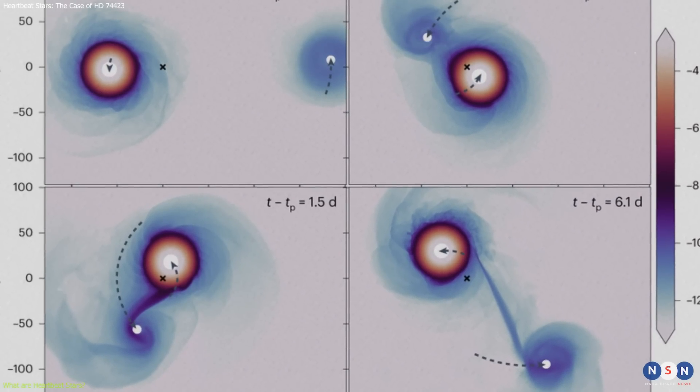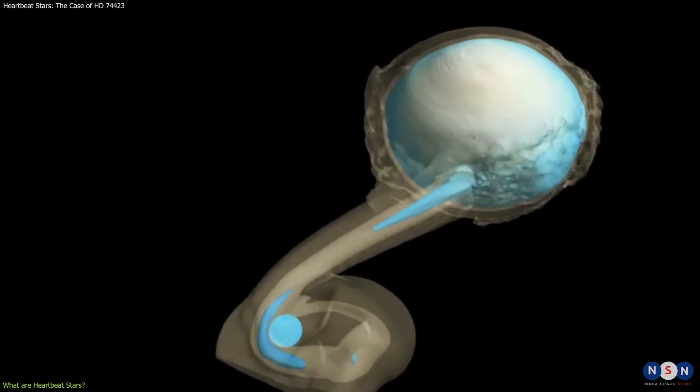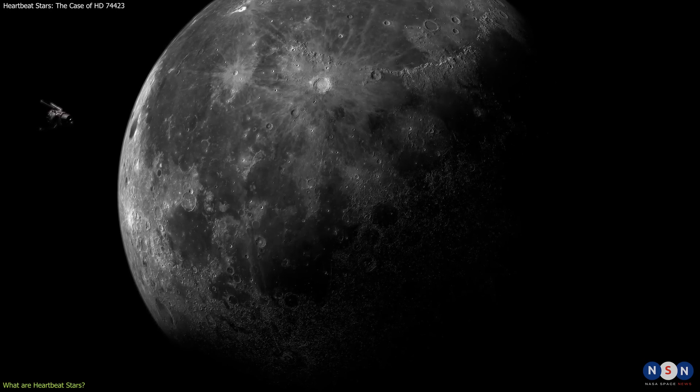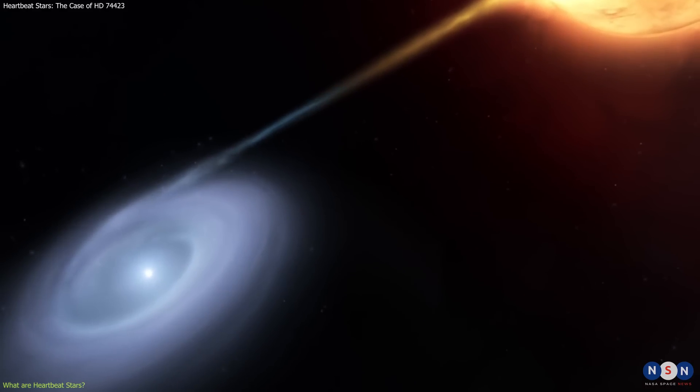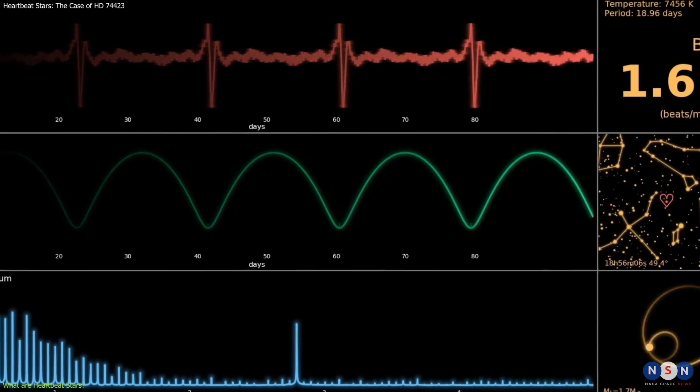When they are close together, something incredible happens. The gravity of one star pulls on the other star and creates tides, just like the moon does on Earth. These tides make the star change its shape and brightness, creating a pulsating effect that looks like a heartbeat on a graph. That's why they are called heartbeat stars.